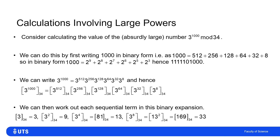The remainder of 3 when divided by 34 is 3. The remainder of 3² = 9 when divided by 34 is 9. Then 3⁴ = 81; 81's remainder when divided by 34 is 13. Squaring again: 3⁸ has remainder 169 mod 34, which is 33.